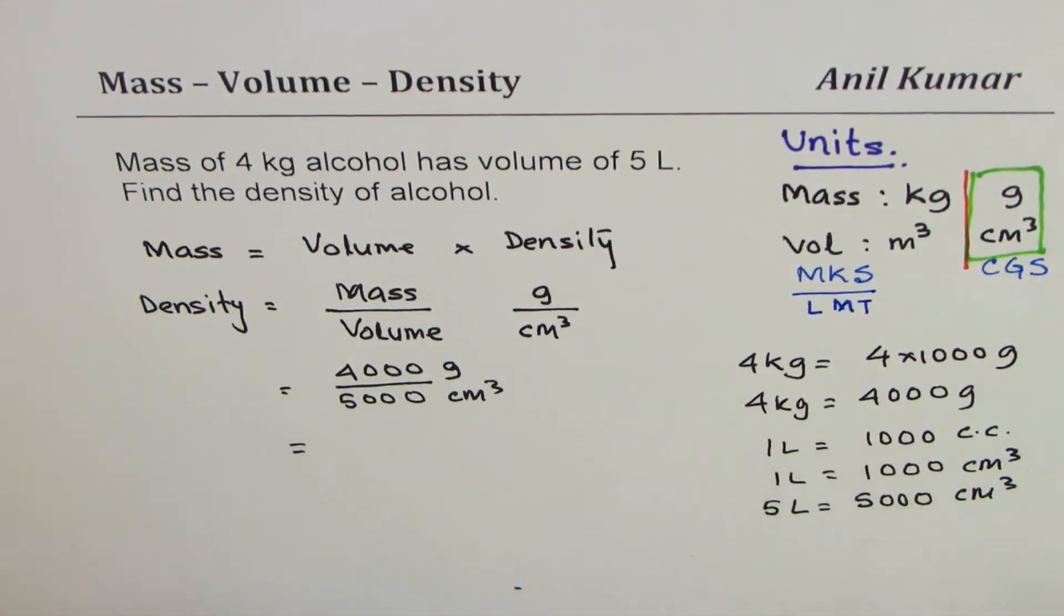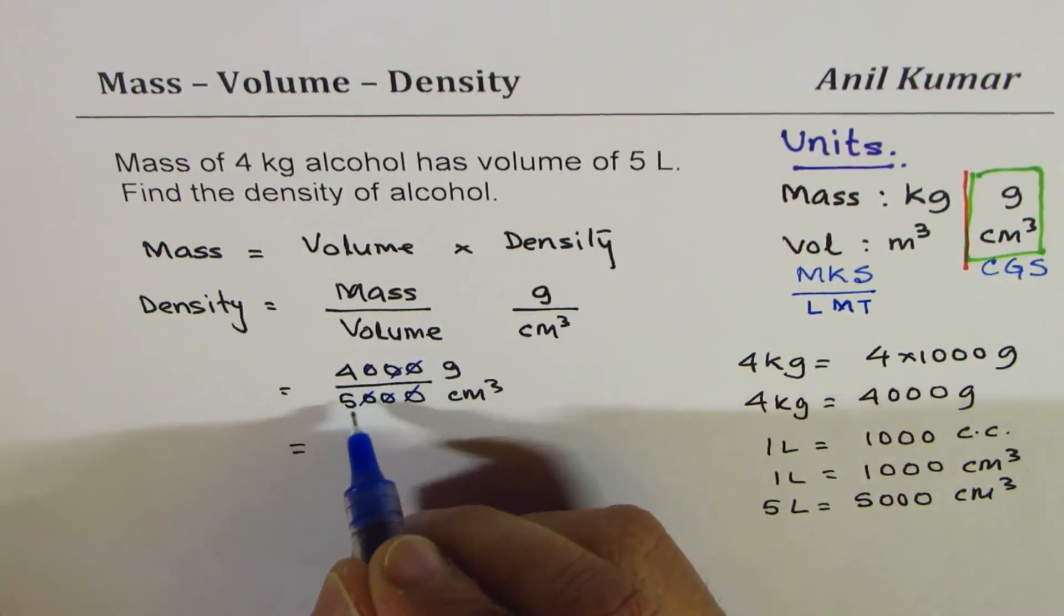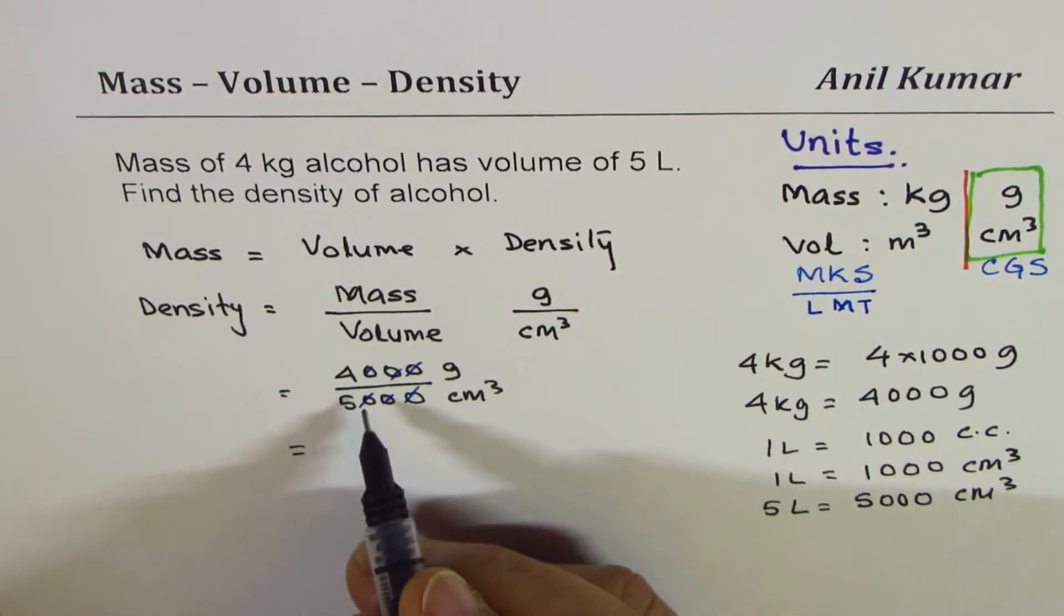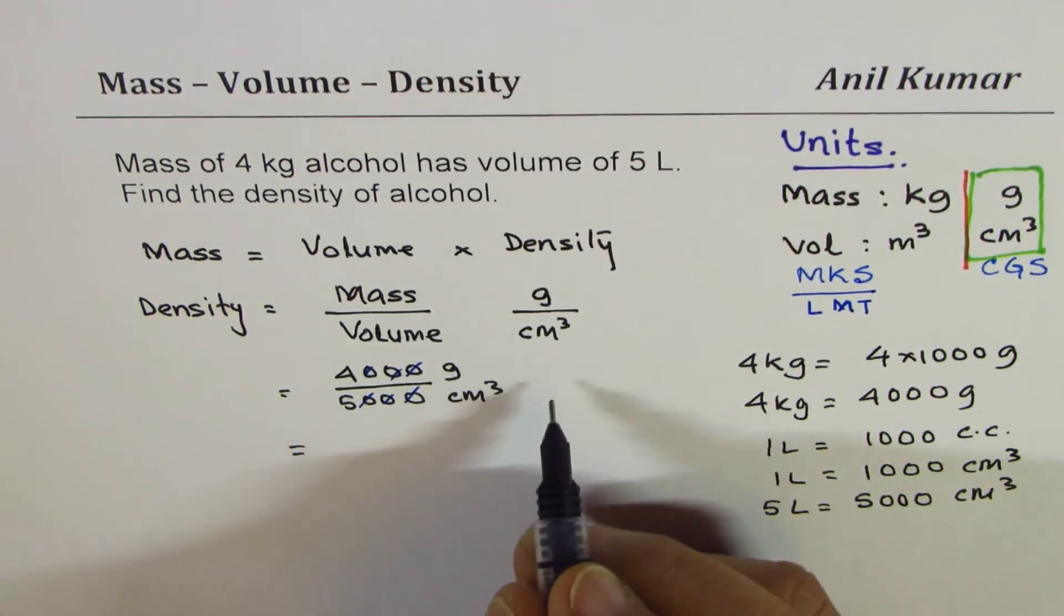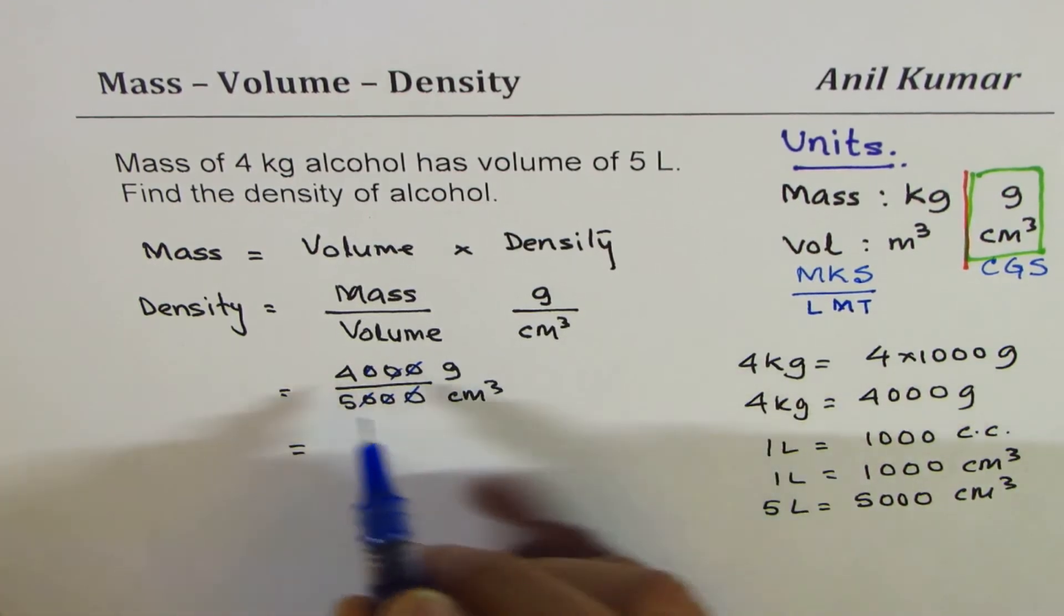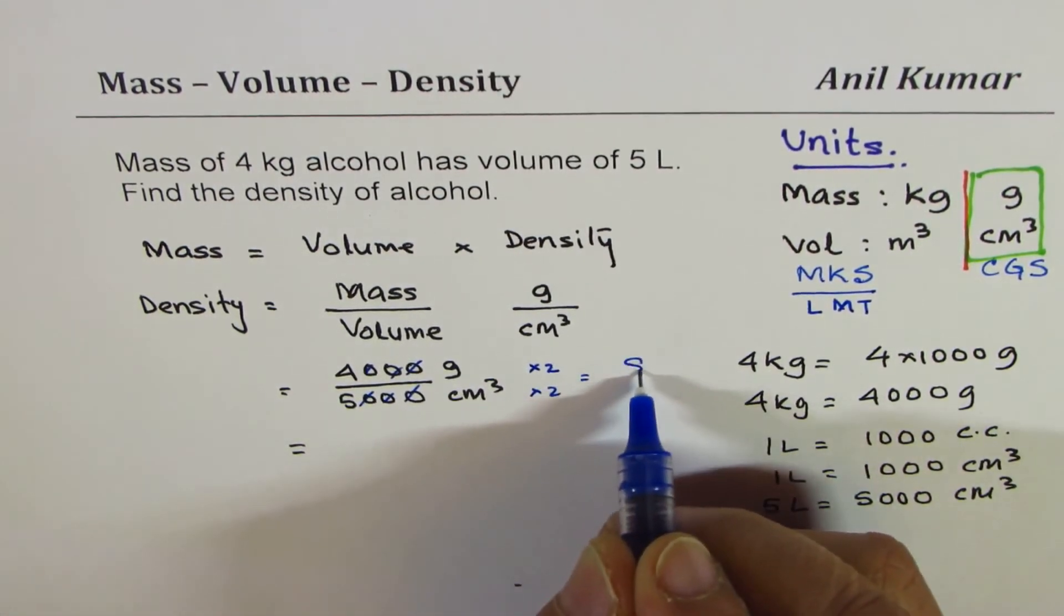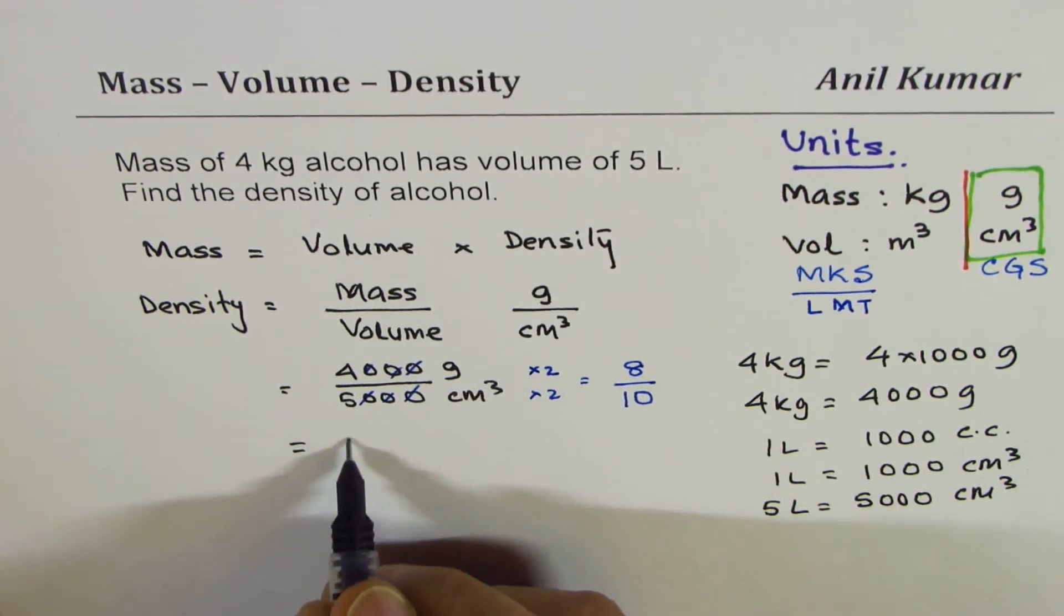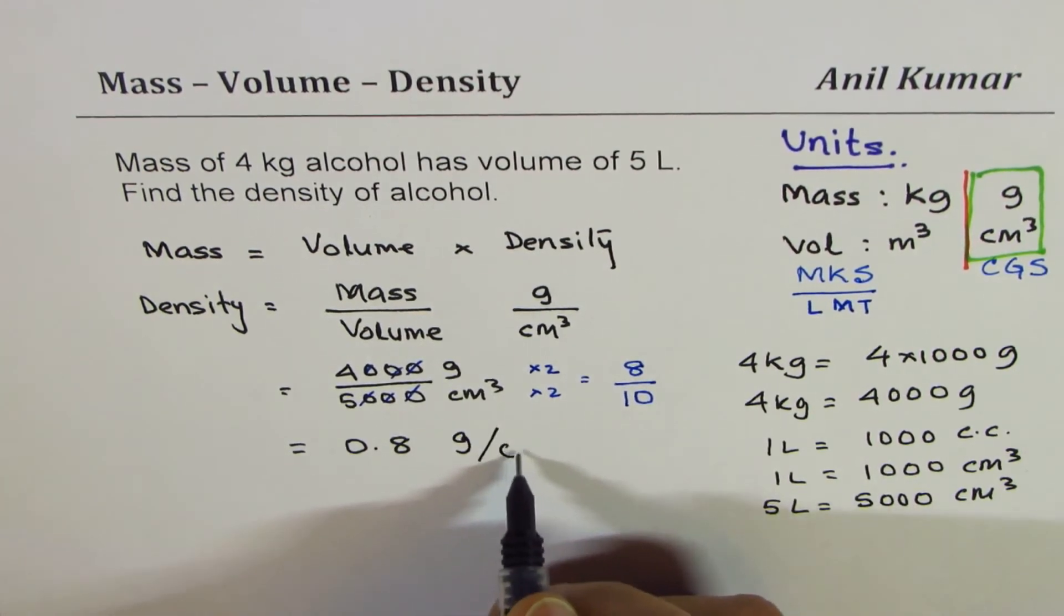So when you divide, use calculator or you can do otherwise also. Thousands cancel, four divided by five, you can say forty divided by ten. Well you could also do it like this, let me approximately show you. If I multiply each by two I get eight over ten, do you see that? So it is kind of easy to see that is zero point eight grams per centimeter cube.